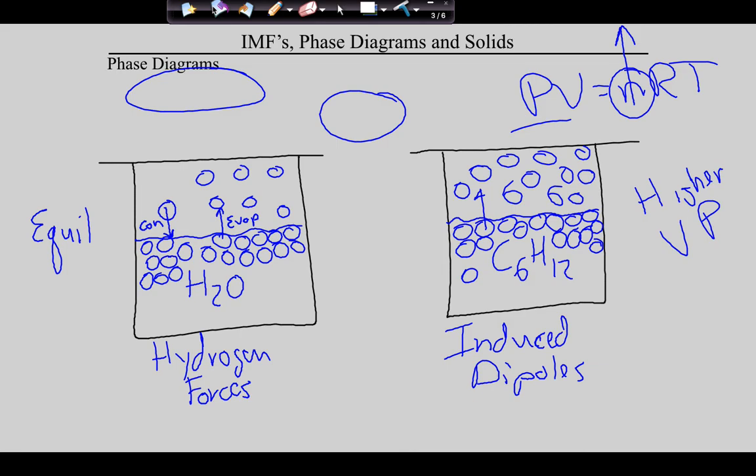In theory, if you could measure vapor pressure as you decrease atmospheric pressure, the vapor pressure would go up as atmospheric pressure goes down, because molecules can more readily jump into the gas phase.